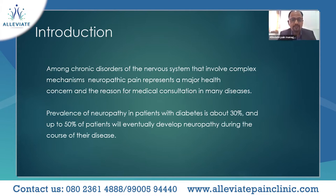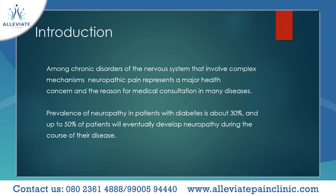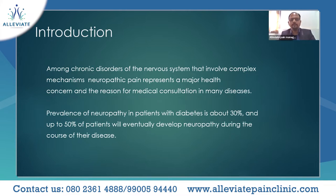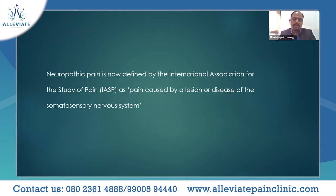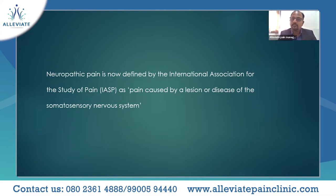Neuropathic pain tells us that the pain is arising from the somatosensory nervous system and, in diabetes, is usually chronic in nature. Neuropathic pain is now defined by the IASP as pain caused by a lesion or disease of the somatosensory nervous system. It is very important to distinguish between nociceptive pain and neuropathic pain because the treatment is very different, and in diabetic neuropathy it is a neuropathic pain caused by a lesion in the somatosensory nervous system.